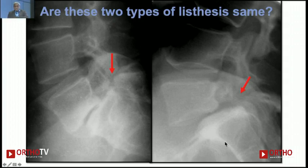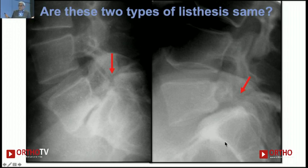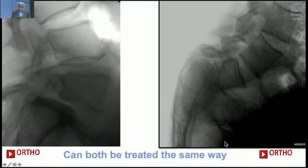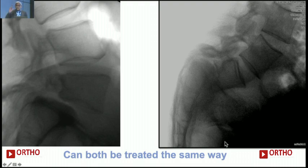Before I start, let me ask you a question. I've put up two cases here. Are both these cases the same? Both are 50% slips, both have got pars defects — are they the same? Just think about it in your mind. Here are two other slips — both are high-grade, high-dysplastic slips. Can both be treated the same way? Just think about it. It is important for you to keep this in your mind.